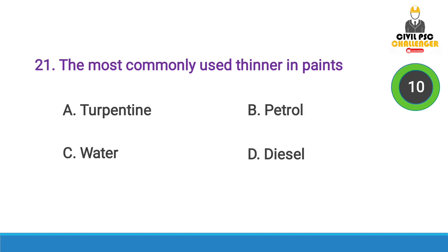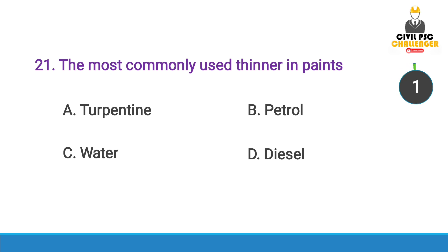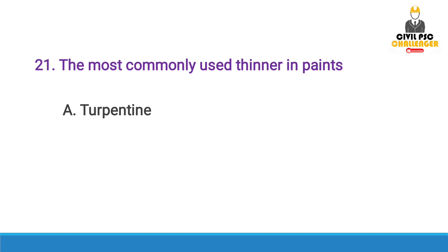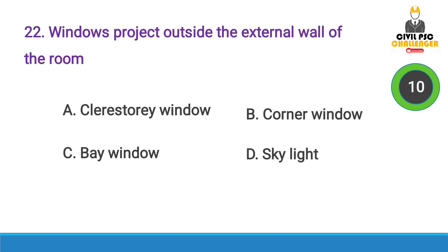Next question: The most commonly used thinner in paints is — Answer option A, Turpentine.